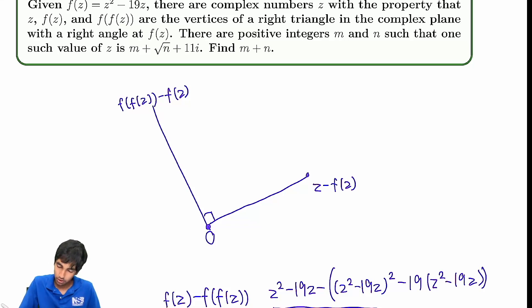Now we just have to do a little bit of algebra, unfortunately, but that's okay. z to the fourth minus 38z cubed plus 361z squared. That's this. Minus 19z squared plus 361z squared. So that's all the stuff in the middle. Now let's combine.